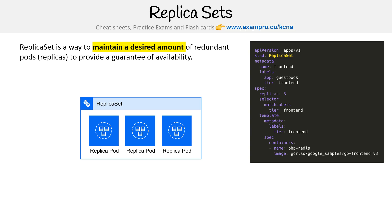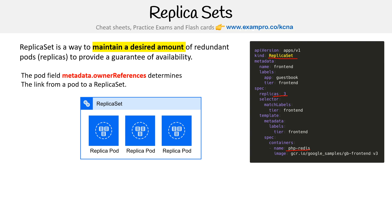Here is the manifest file. Notice that it's called a replica set, and it looks just like a deployment — you specify the replicas and you're specifying the containers.